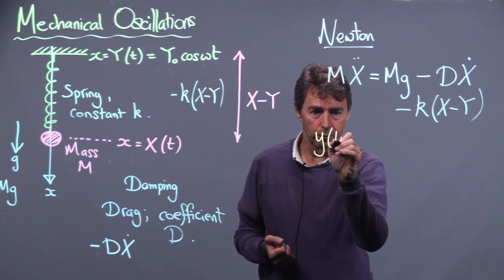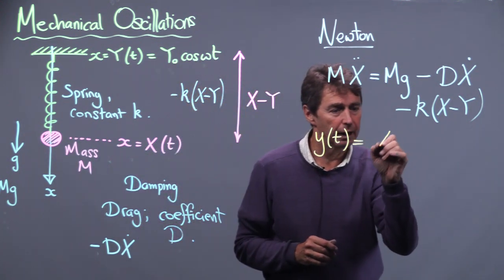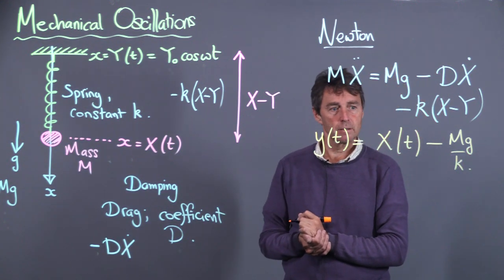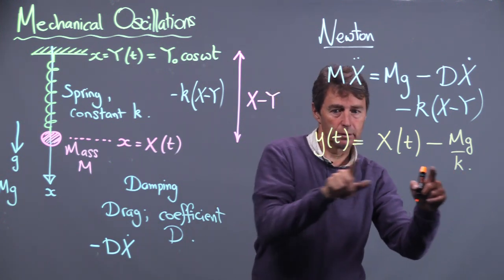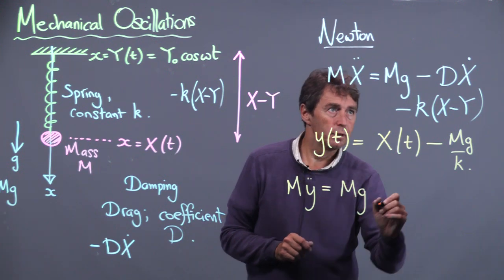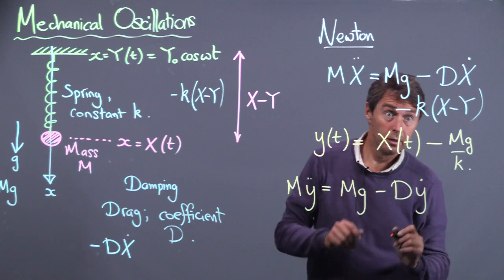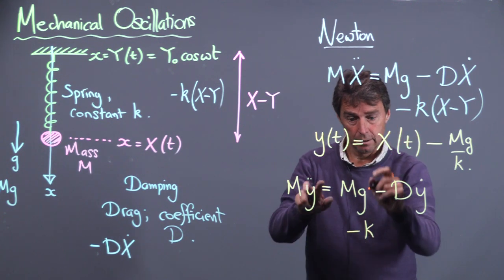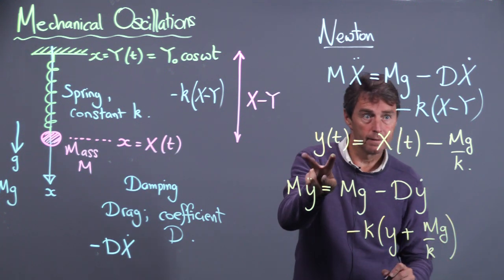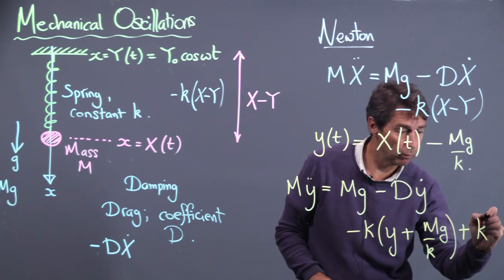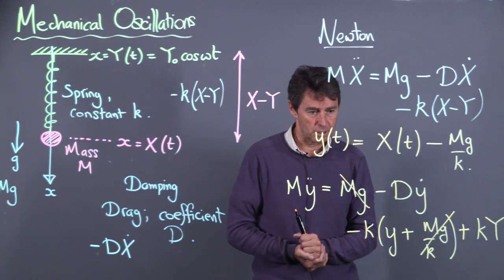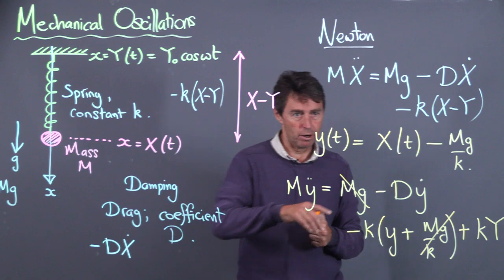To simplify, I'm going to define a new variable y(t) = X(t) − mg/k. Since mg/k is a constant, the derivatives of y are just equal to the derivatives of X. Substituting, I get mÿ = mg − dẏ − k(y + mg/k) + kY, and the mg terms cancel. This successfully eliminates the gravity term.